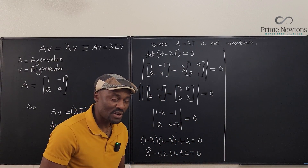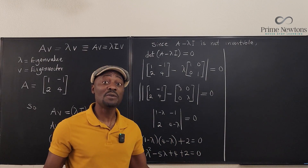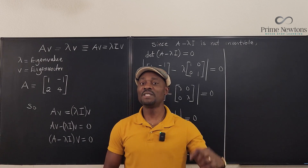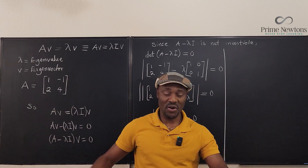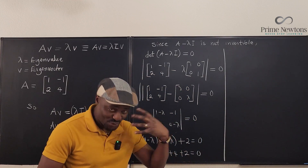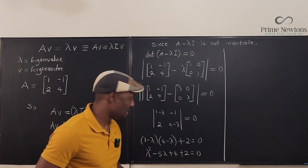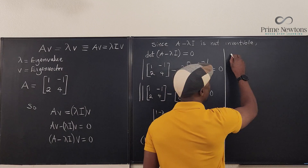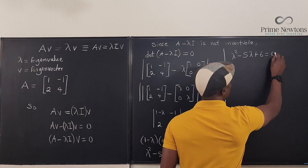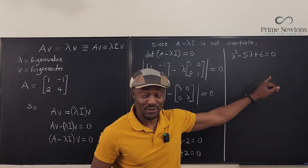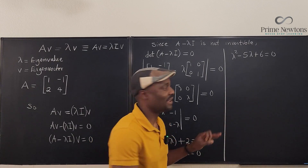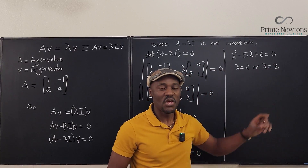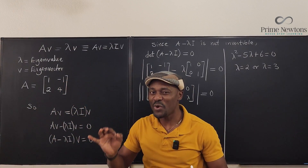Cleaning up, we get λ² - 5λ + 6 = 0. This is a quadratic equation — it's a polynomial of degree two because our matrix is 2×2. In general, an n×n matrix gives a polynomial of degree n. Solving this quadratic, we get λ = 2 or λ = 3.